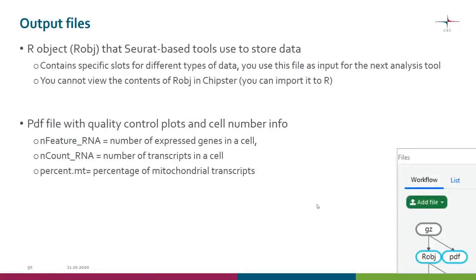When you run the tool, you get two output files: one is the R object and the other is a PDF file. The R object is a special data structure — a Seurat object — that Seurat-based tools use for storing different kinds of data, with specific slots for different data types. In Chipster you use this file as input for the next analysis tool. You cannot view this file directly in Chipster, but you can import it in R. The interesting file at this point is the PDF file containing the quality control plots.